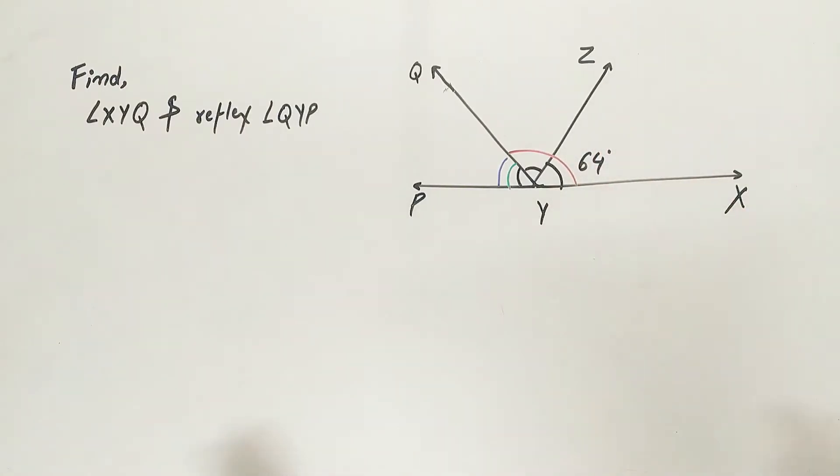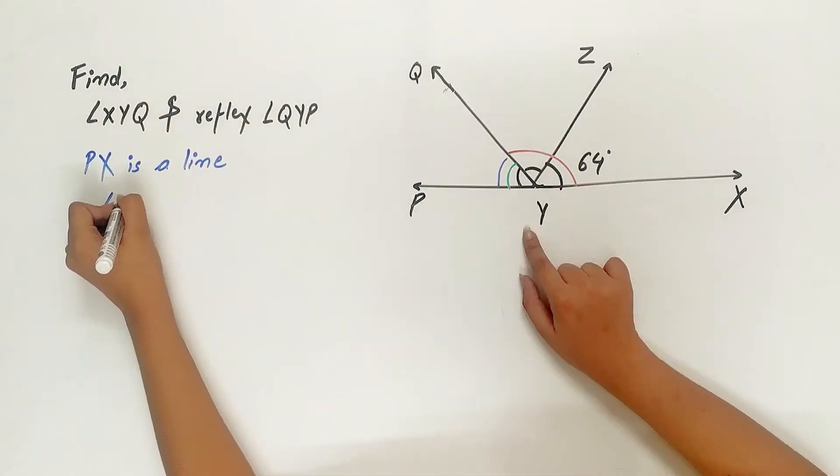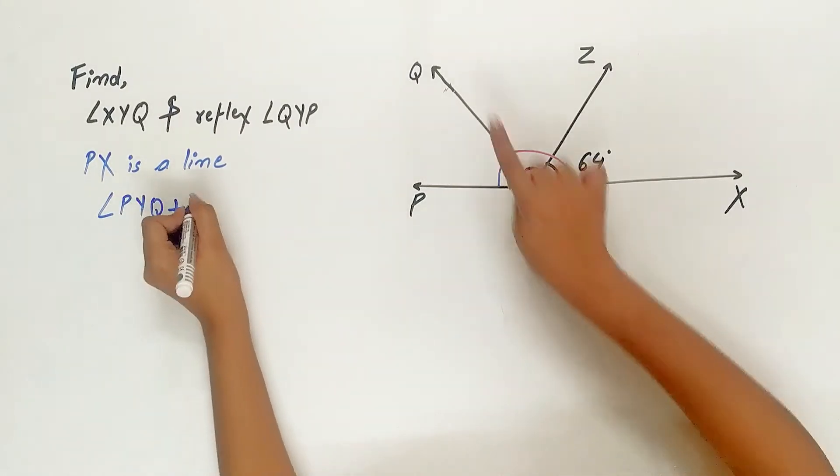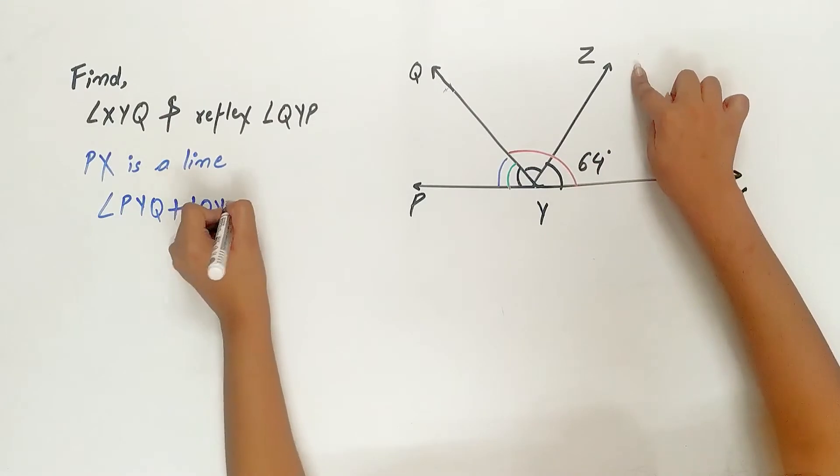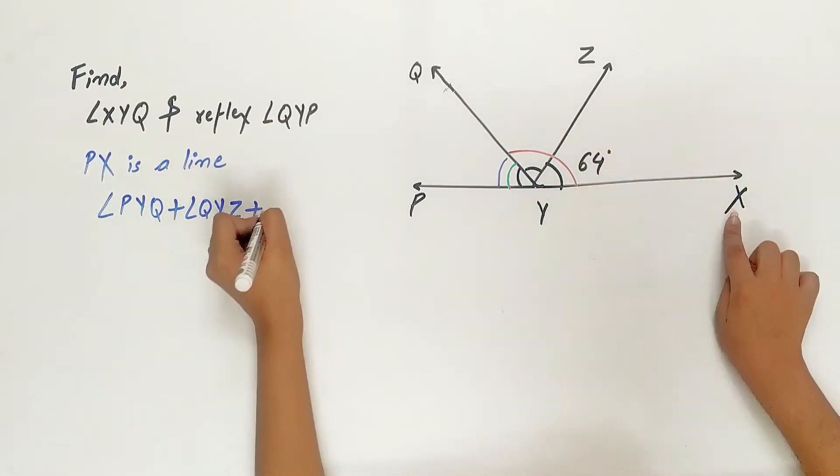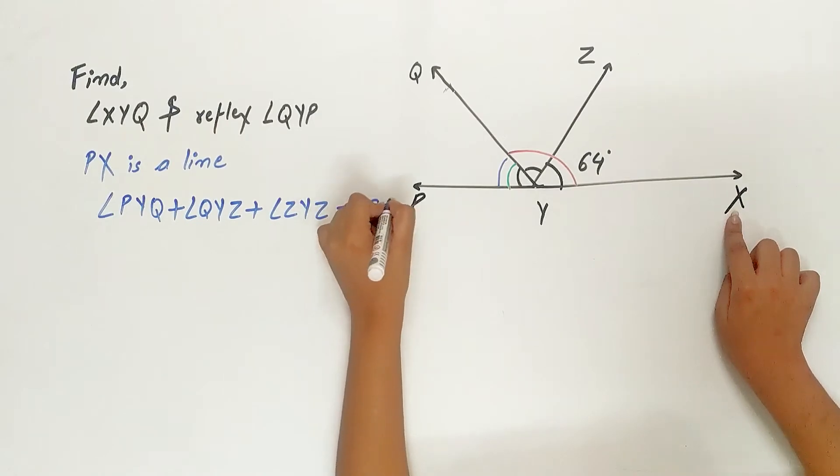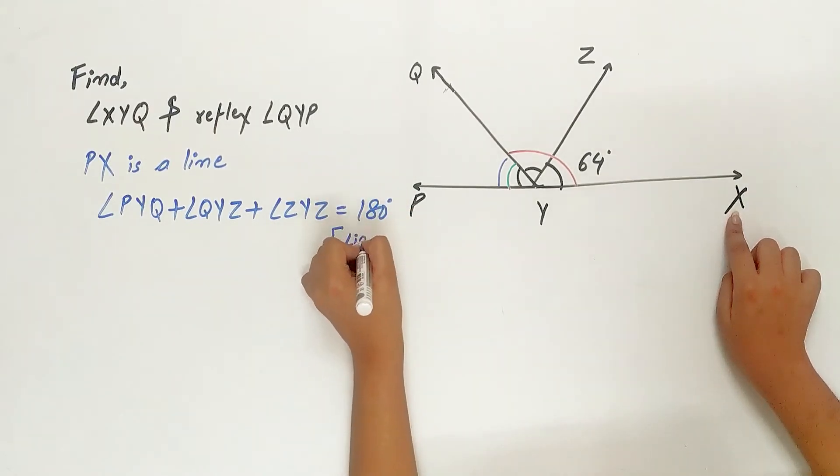So we can find out angle PYZ. So angle PYQ plus angle QYZ plus angle ZYX equal to 180 degrees because of linear pair.